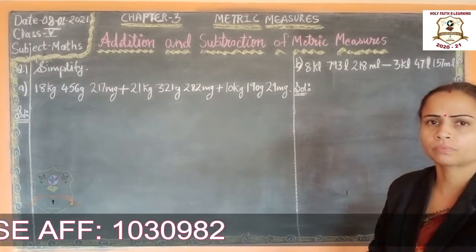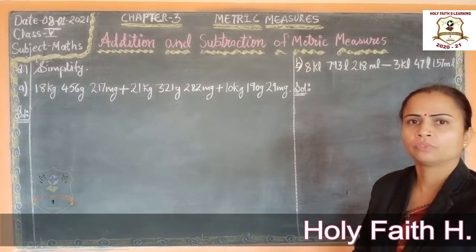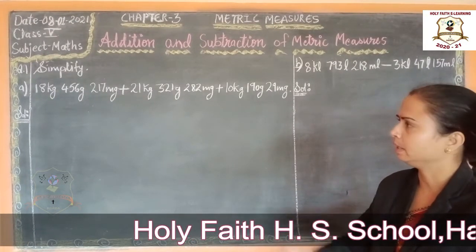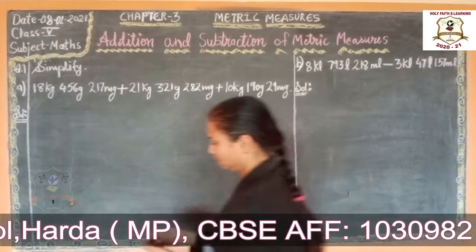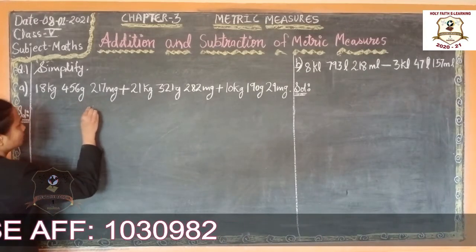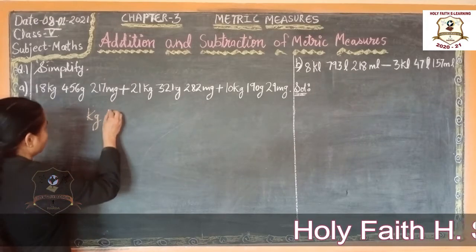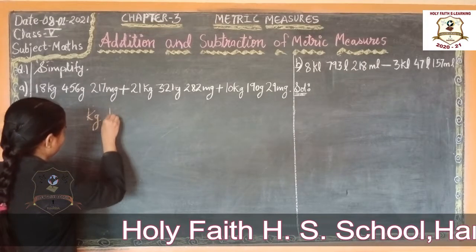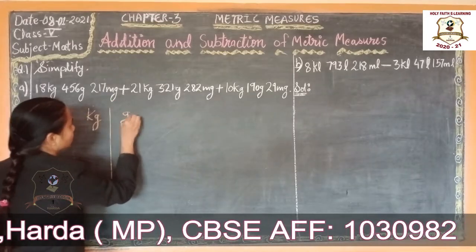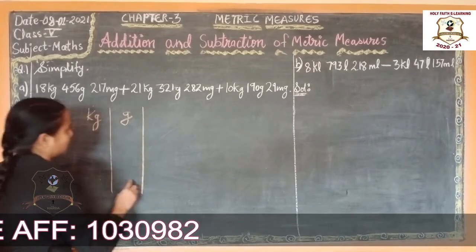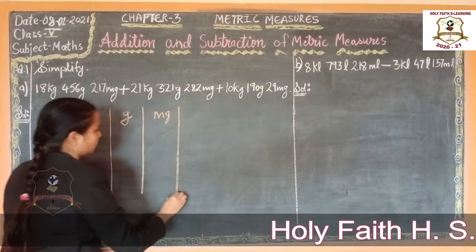So we have to add these numbers. First we arrange this number in columns like this. See here, first is kg column. Now draw time, then gram. We will write here gram. Next column is milligrams. So we write milligrams.